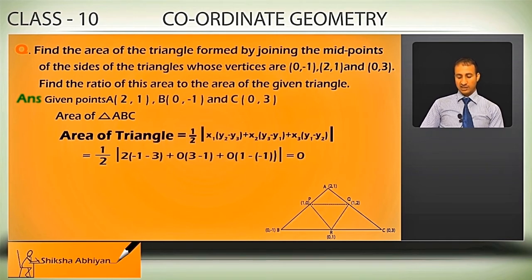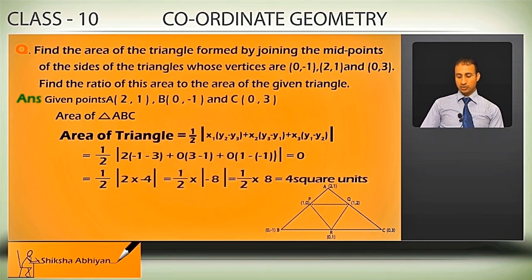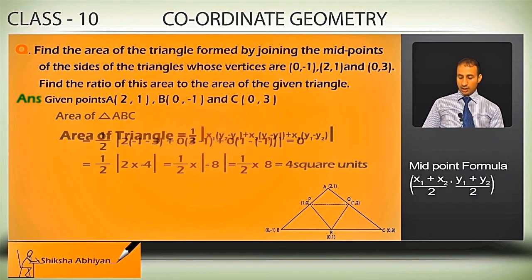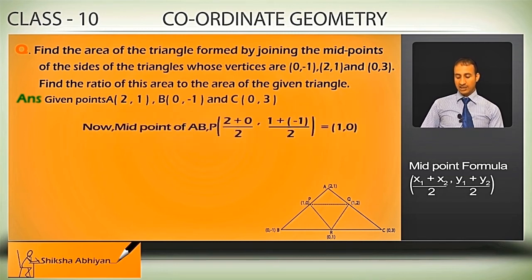Area of triangle ABC = ½ |2×(-1-3) + 0×(3-1) + 0×(1-(-1))|. This gives ½ |2×(-4) + 0 + 0| = ½ × |-8|. Area is never negative, so we take the absolute value: ½ × 8 = 4. So the area of triangle ABC is 4 square units.